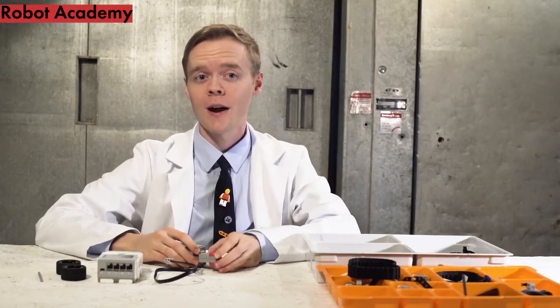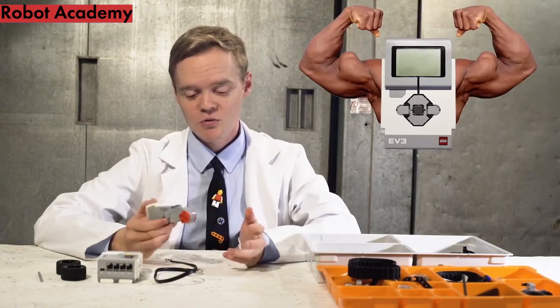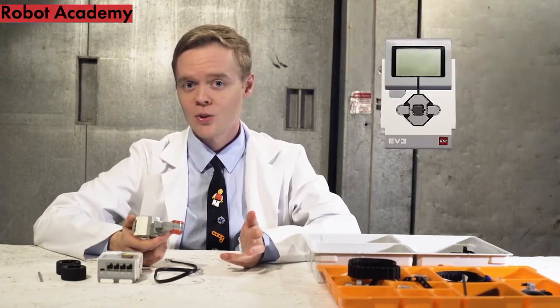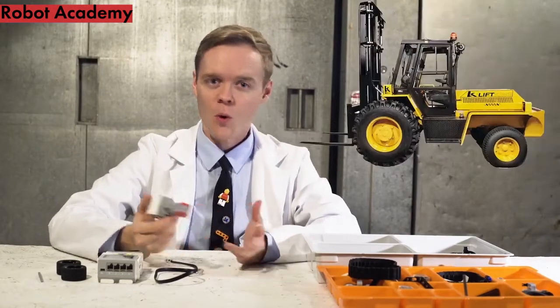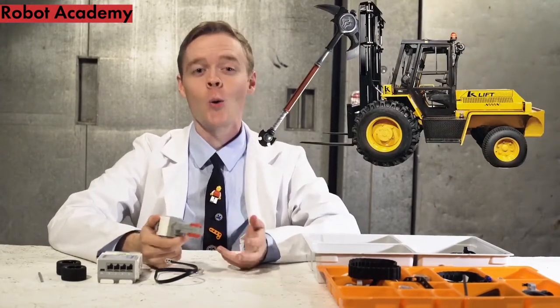As humans, we get around using our muscles. This robot doesn't have muscles, so instead it uses motors like this one. And our robots can use these motors to power wheels, forklifts, battle axes, whatever we want to build.